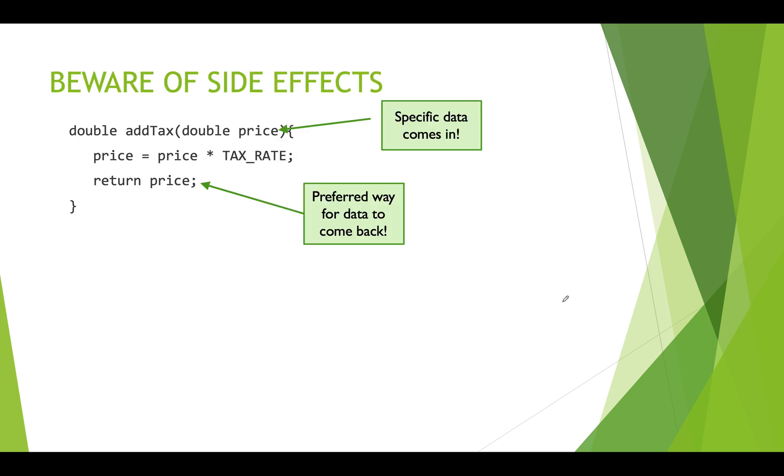Let's look at a specific example. Say we have this function called add tax. It takes in a price that's a double and then it calculates the price with the tax rate and returns it as a double. Specific data is coming in and this is the preferred way for the data to come back so that it can be captured somewhere and maybe printed out or put into a database or what have you.